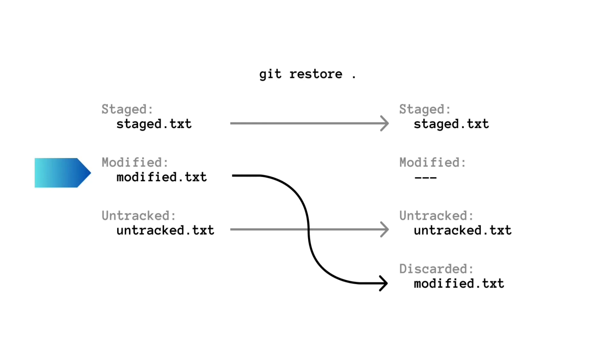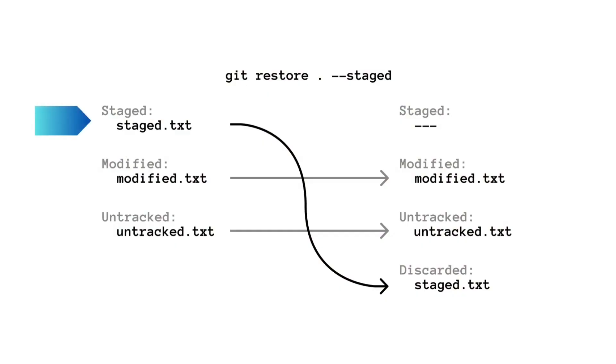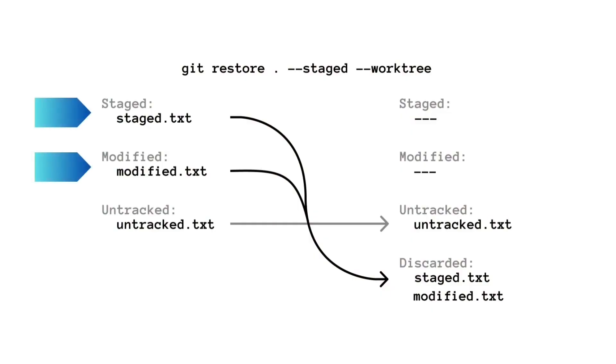Git restore. This command is used to undo changes in the staged area and in the working directory. If the changes you want to undo are in a tracked file but are not staged yet, run git restore dot or the file name, and git will discard those changes. If the changes are staged, run git restore with the --staged flag to discard the changes in the staged area. If you have both staged and unstaged changes you want to undo, run git restore dot with --staged --worktree.